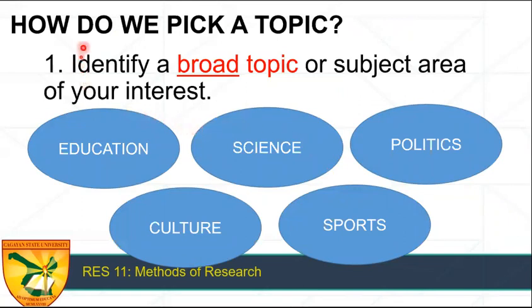So first is identify a broad topic or subject area of your interest. This is the most asked question when doing a research. It is emphasized from your handout that selection of a research topic and problems is the starting point of our research. And identification of a suitable topic is one of the most difficult parts of our research. Do not worry because we will do it step by step. So number one is we identify a broad topic or a subject area of your interest.